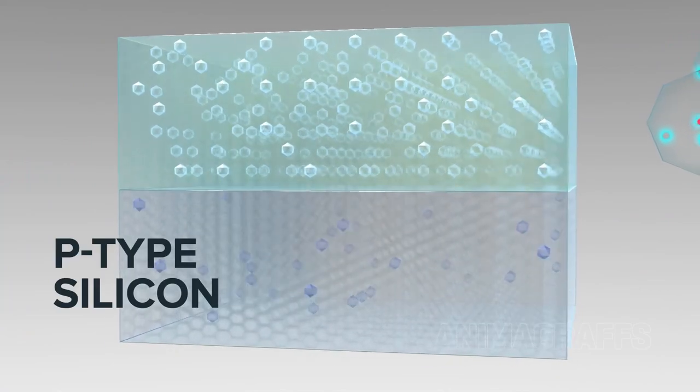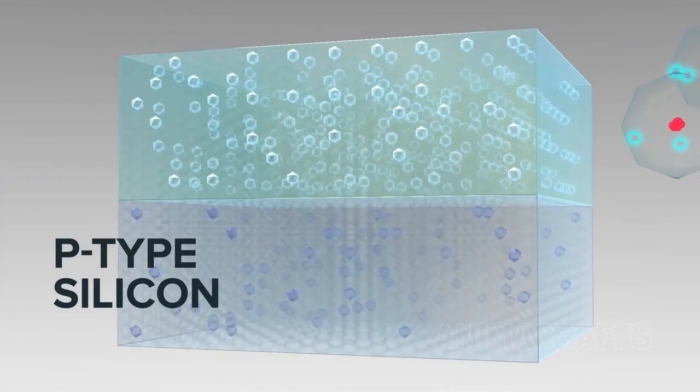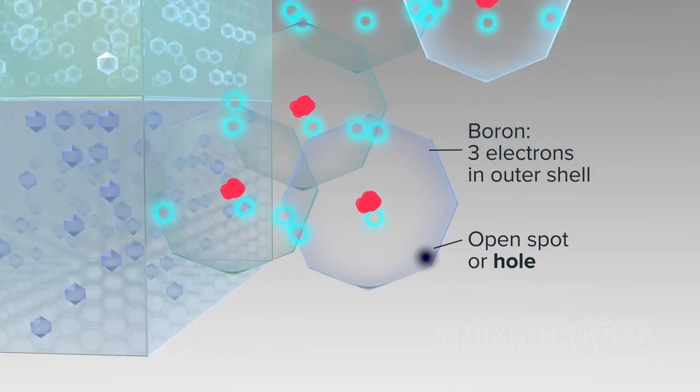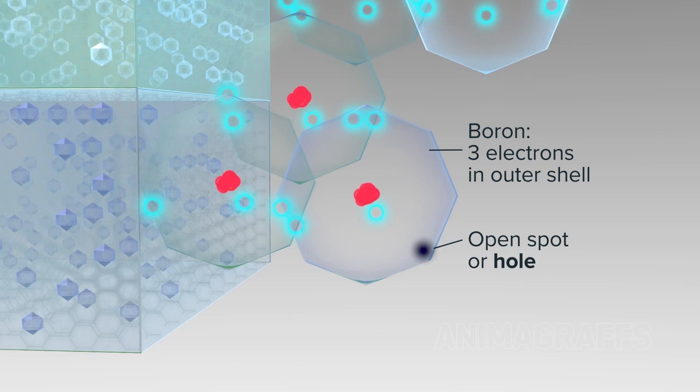P-type silicon, P for positive, is doped with boron, which has three electrons in its outer shell, leaving an extra open space, or hole, when bonding with silicon.